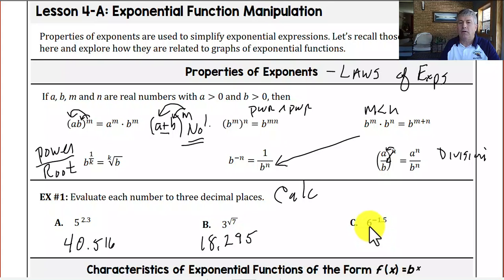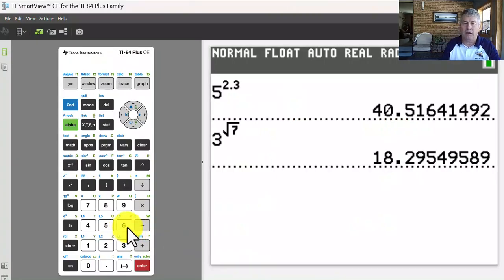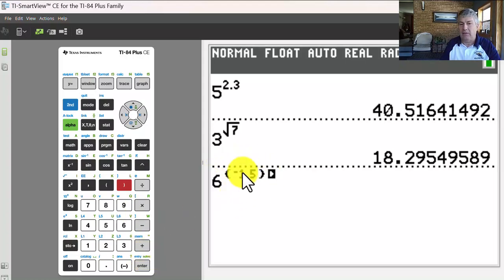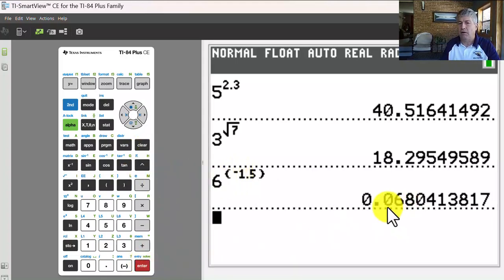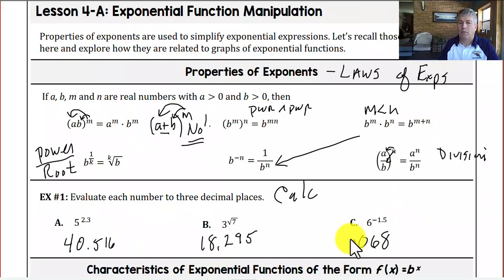And in our final sample, c is 6 to the negative 1.5. I go back to my calculator, 6, all raised, and I'm going to use parentheses, the negative symbol, 1.5, or negative 3 halves. Now that is not a negative number, that's just going to be a small number, that's a reciprocal. And I hit enter, and sure enough I get 0.068, which is indeed a small number. So I fill those in, I did each of those to three decimal places.